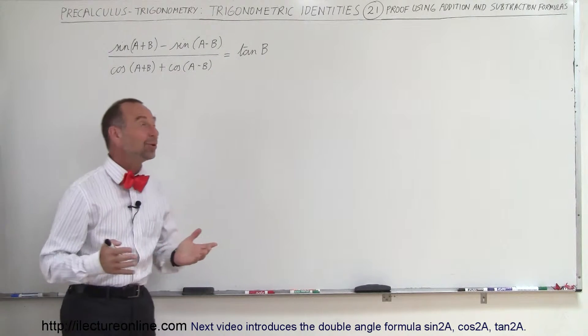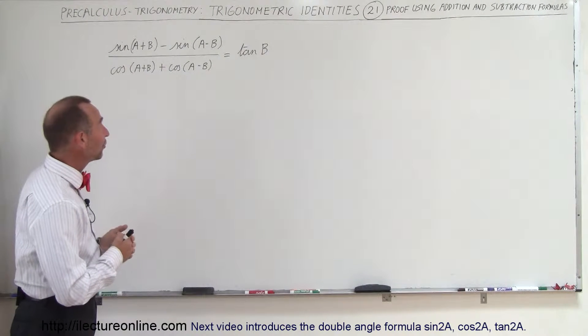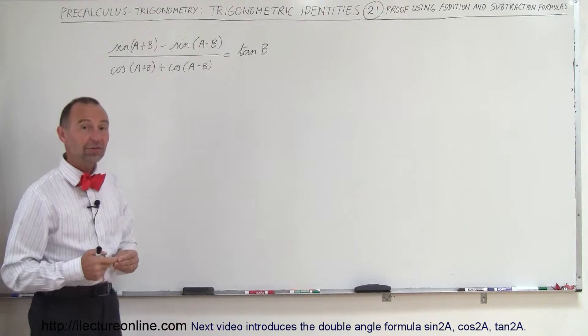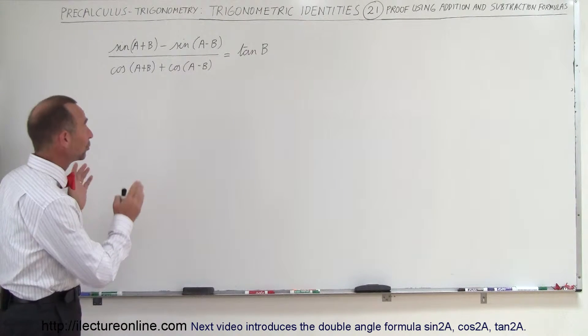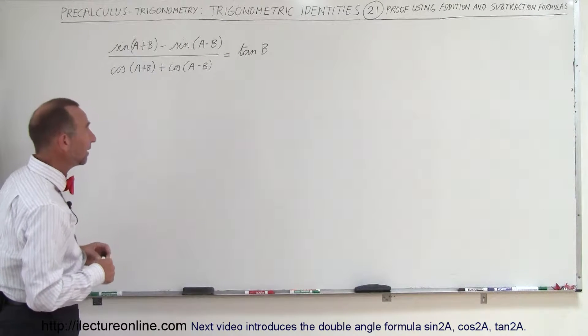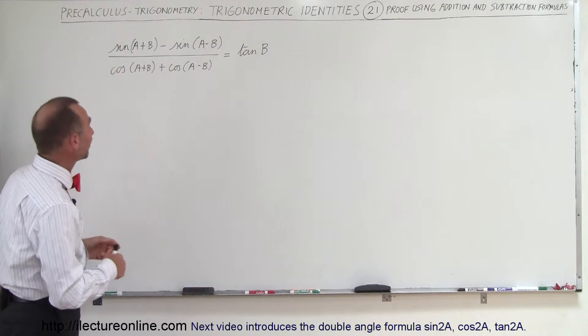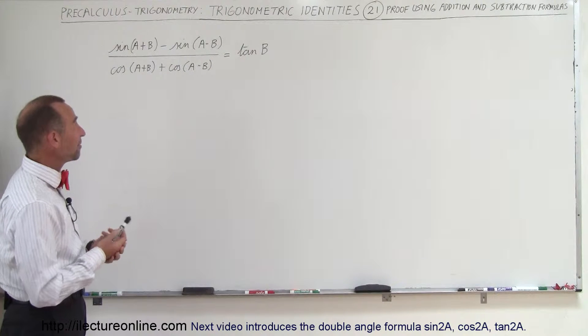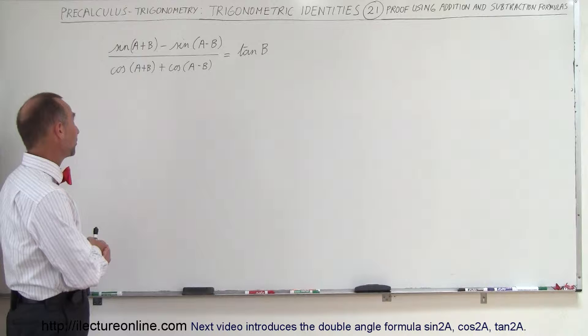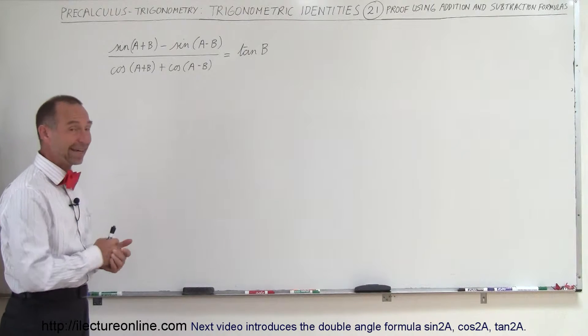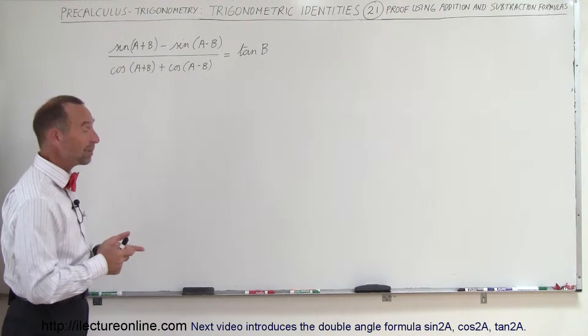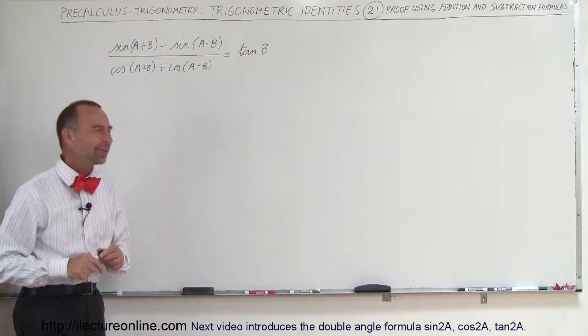Welcome to our lecture online, and since we know the identities for the sum and the difference of angles, we're going to use that now to prove this particular identity. This is kind of a classic identity. We have the sine of a plus b minus sine of a minus b divided by the cosine of a plus b plus the cosine of a minus b, and that's supposed to be equal to the tangent of b. Doesn't seem likely, but let's see what happens.